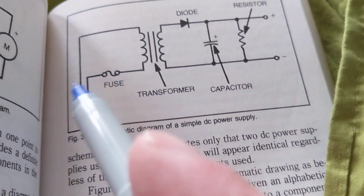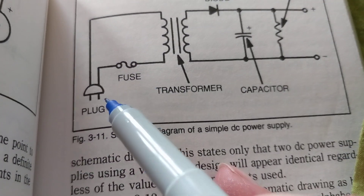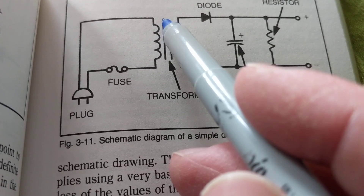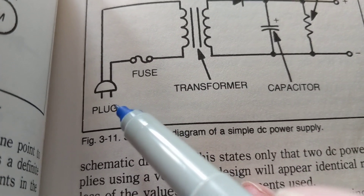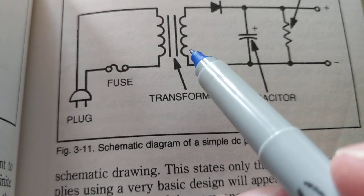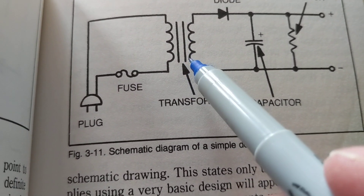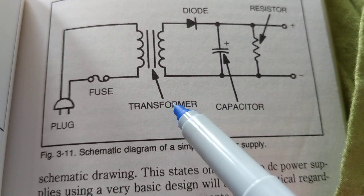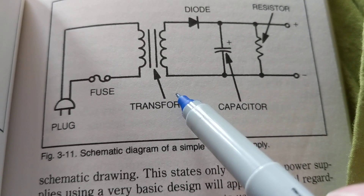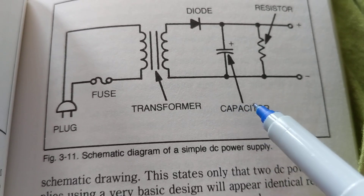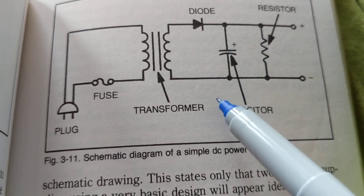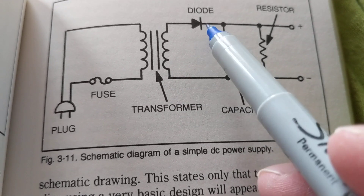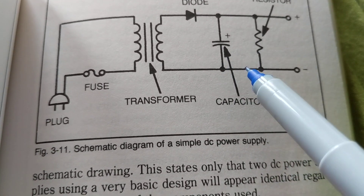Now a fuse here, a plug here — we make one connection from one side and then the other side. This is a transformer with an iron core, this is a capacitor, and this is a diode. In this schematic it labels the components — but this is just a basic diagram. You won't find any real diagram that says 'this is a capacitor, this is a resistor' in plain text like that.